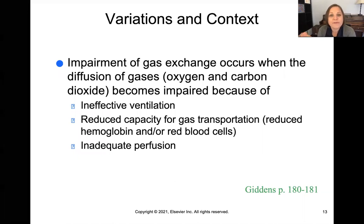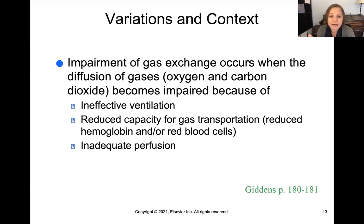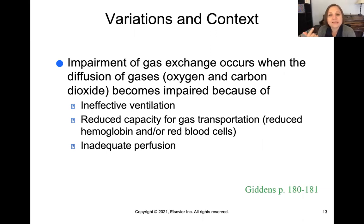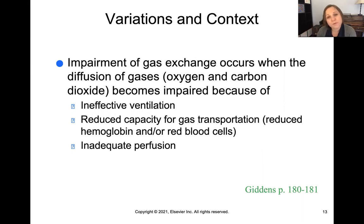Not everything is always optimal — there will be times of impairment in gas exchange, meaning there's a problem with the diffusion of gases, oxygen and carbon dioxide. This can happen for three reasons: ineffective ventilation, where movement of air in and out of the lungs isn't happening well; reduced capacity for transport, lacking adequate red blood cells and hemoglobin; or inadequate perfusion, where there isn't enough blood flow for oxygen to reach the tissues.